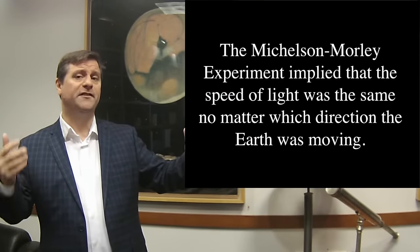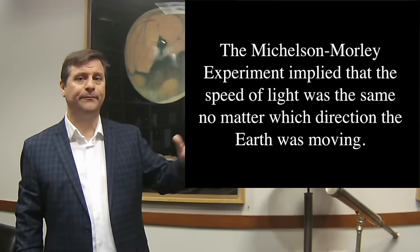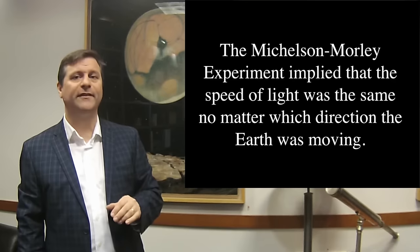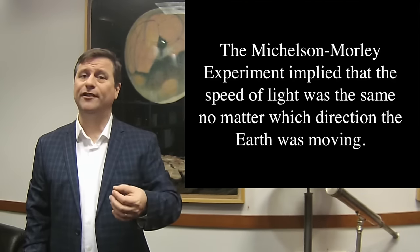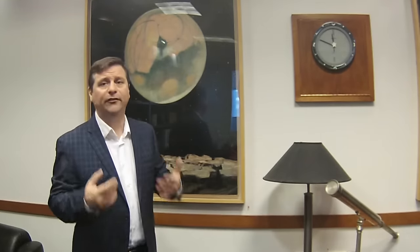What's the speed of light? What Michelson and Morley found was that the speed of light was constant no matter which way you looked — it was always the same, whether going across the movement, with the movement, or at any angle to the movement. The speed of light was the same. Really fascinating.